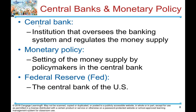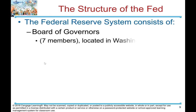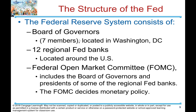Central bank and monetary policy. A central bank is an institution that oversees the banking system and regulates the money supply. Monetary policy is the setting of the money supply by policymakers in the central bank. The Federal Reserve is the central bank of the United States, responsible for conducting monetary policy. The Federal Reserve system consists of a board of governors — seven members located in Washington, D.C. — 12 regional Federal Reserve banks located around the United States, and the Federal Open Market Committee (FOMC), which includes the board of governors and presidents of some regional federal banks. The FOMC decides monetary policy.